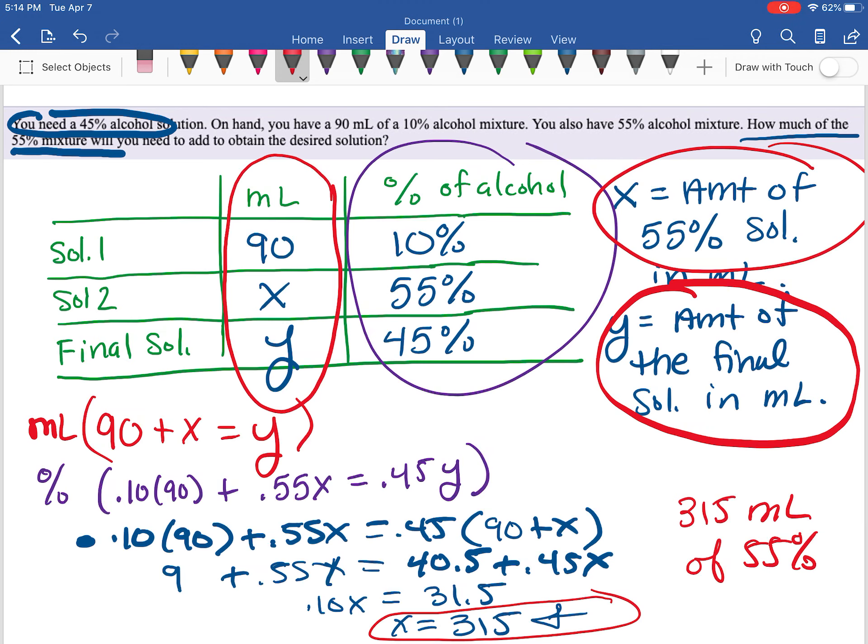Now if we want to figure out how much of the final solution we would have, we would just take 315 and add it to the 90, and we would get 405.